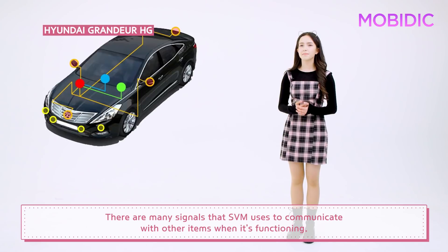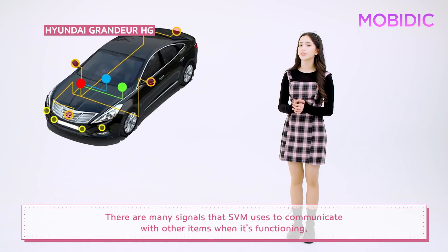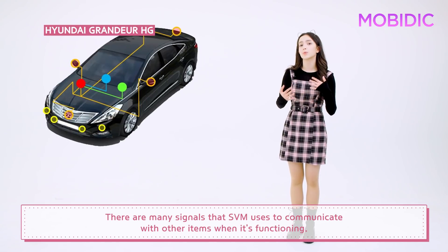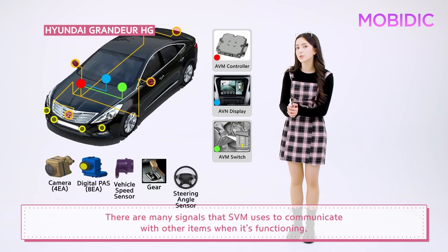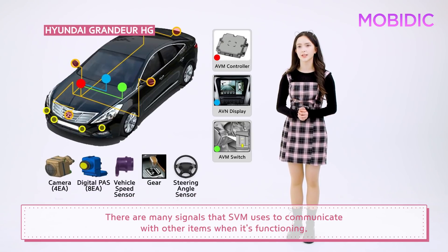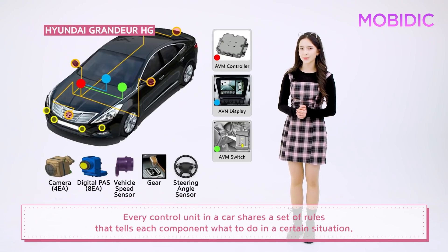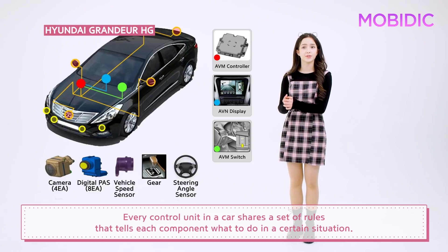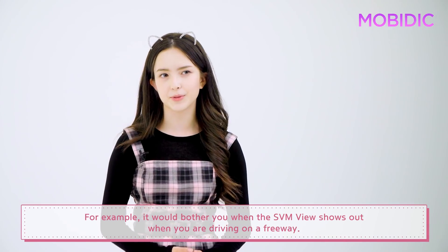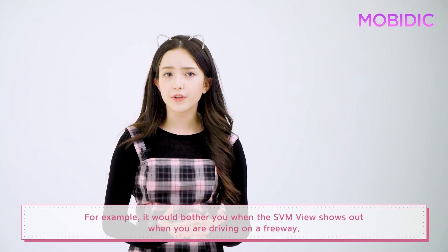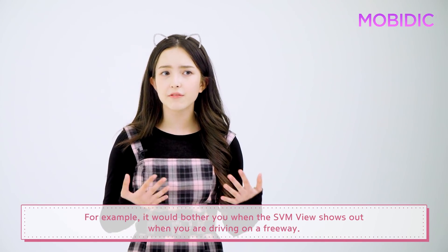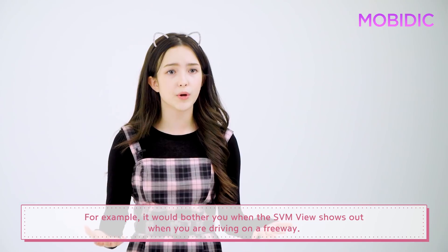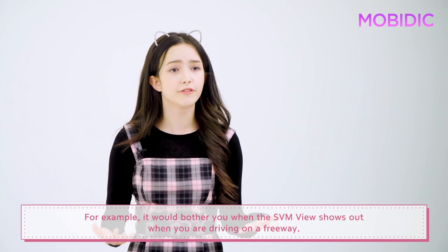There are many signals that SVM uses to communicate with other items when it's functioning. Every control unit in a car shares a set of rules that tells each component what to do in a certain situation. For example, it would bother you when the SVM view shows up when you are driving on a freeway.